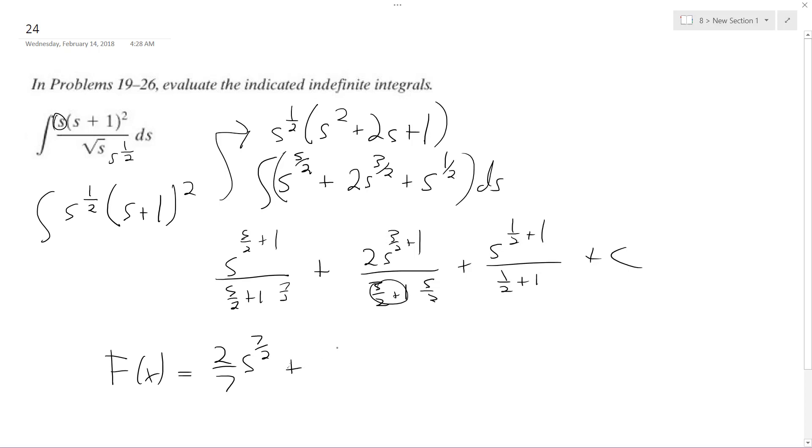So I get plus, it becomes four-fifths because this two goes up and multiplies times that two. So I get 4s to the five-halves over 5, plus this becomes three-halves.